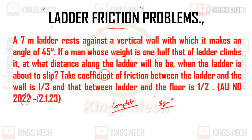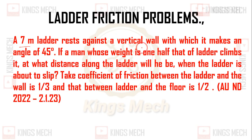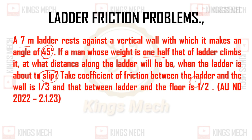Coming to this problem: a seven-meter ladder rests against a vertical wall, making an angle of 45 degrees. A man whose weight is one-half of that of the ladder climbs it. At what distance along the ladder will he be when the ladder is about to slip? The coefficient of friction between ladder and wall is 1/3, and between ladder and floor is 1/2.